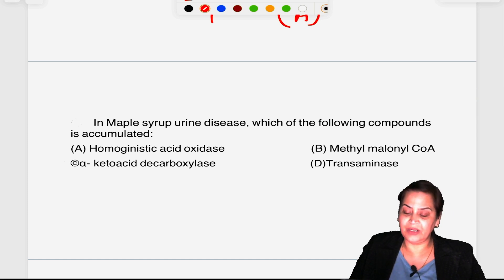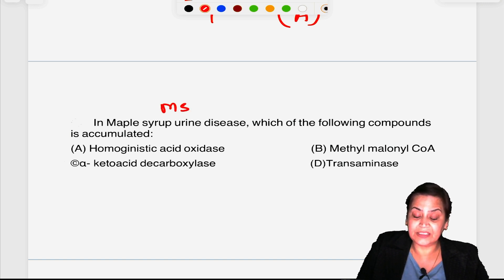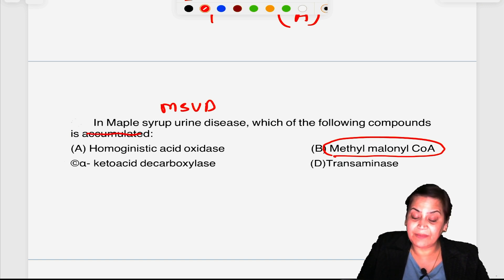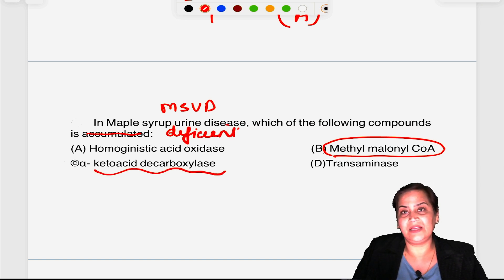In maple syrup urine disease, which of the following compounds is accumulated? This is a very important question asked in your FMGE exam some 2-3 years back. Always remember MSUD: the deficient enzyme is alpha-ketoacid decarboxylase. Which of the following compound will be accumulated? It will be methylmalonyl coenzyme A. And if it is which of the following enzyme is deficient, then it will be alpha-ketoacid decarboxylase. You have to see the option and then only you can write your answers.